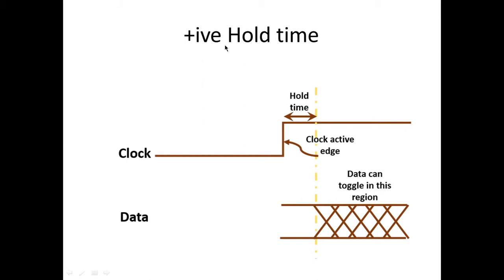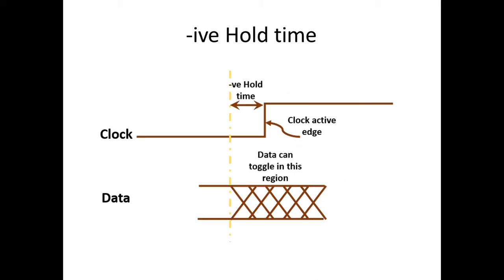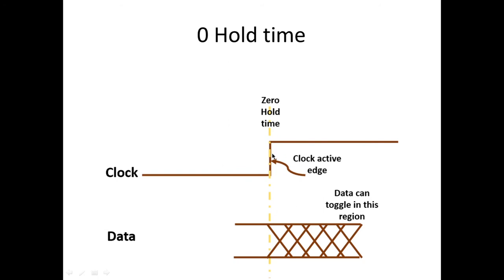Similarly, positive hold time is the time required so that data should be stable after the rising edge of the clock for a positive edge-triggered flip-flop. For negative hold time, the data should be stable before the negative hold time boundary, and can change afterward. Zero hold time means the data should be stable at the same rising edge of the clock, and can toggle any number of times after the hold time.